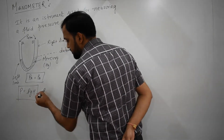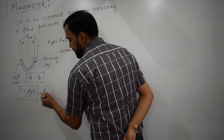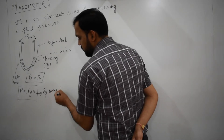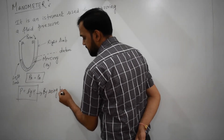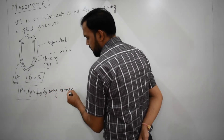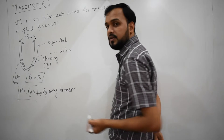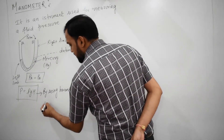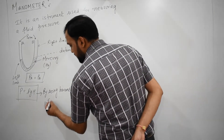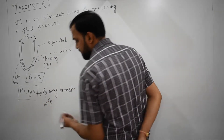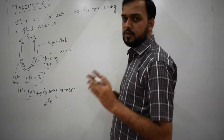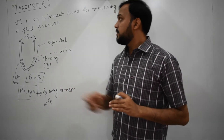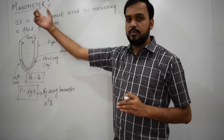By using a manometer, you can get the value of atmospheric pressure, which is 10 to the power of 5. But today in my lecture, we will talk about the manometer cases.